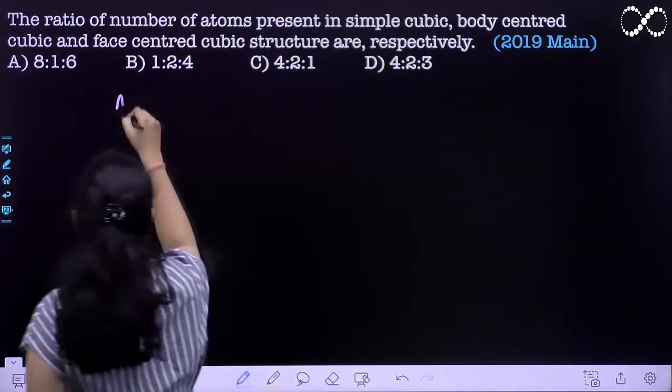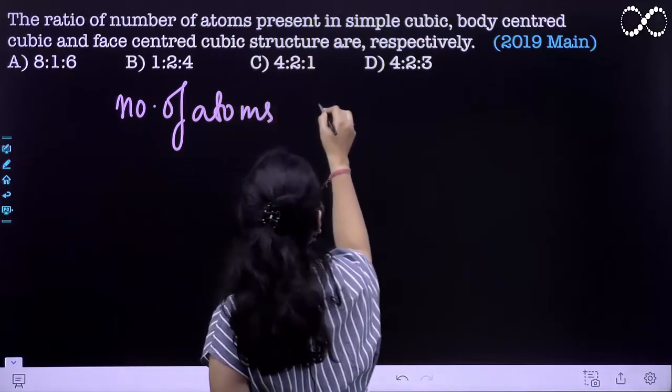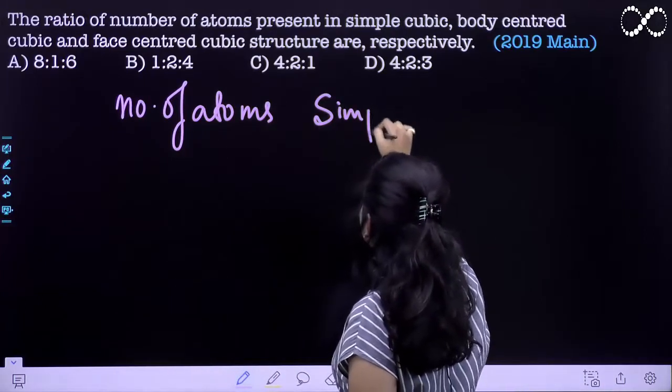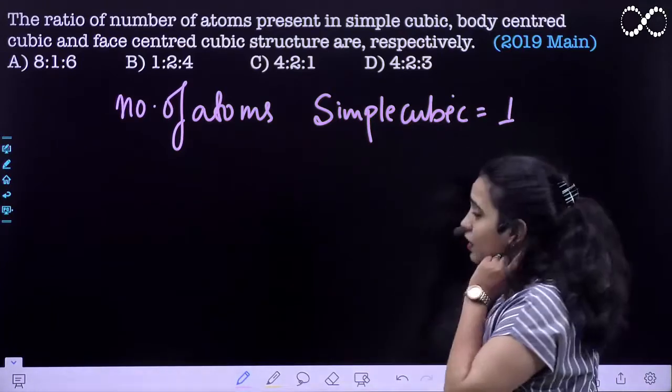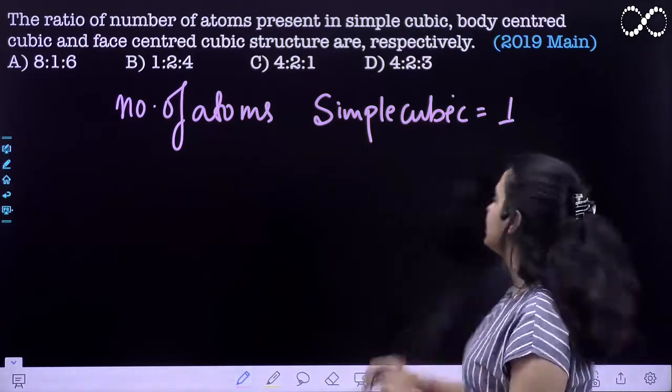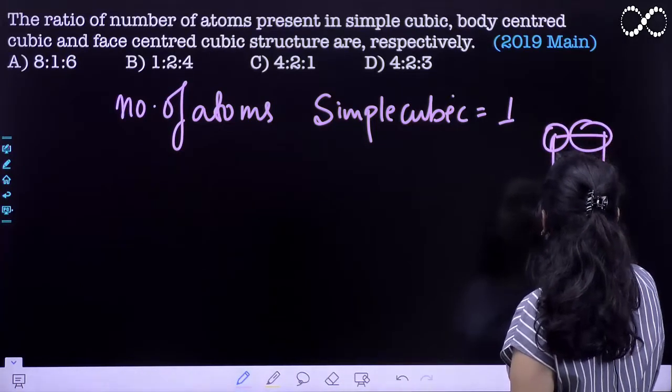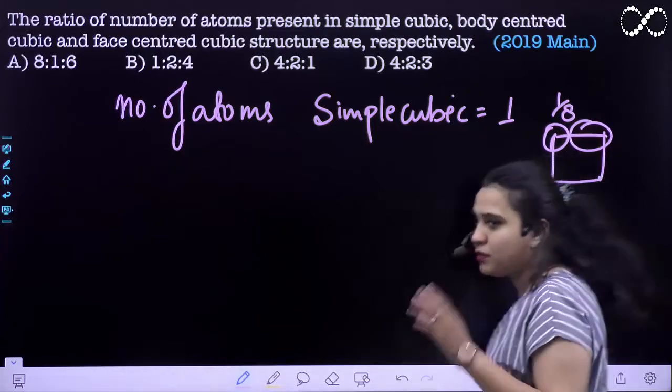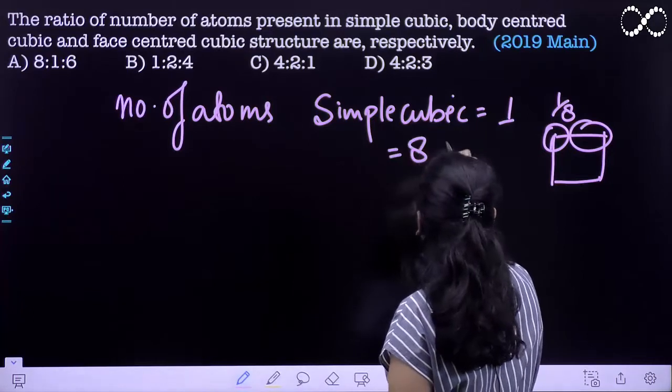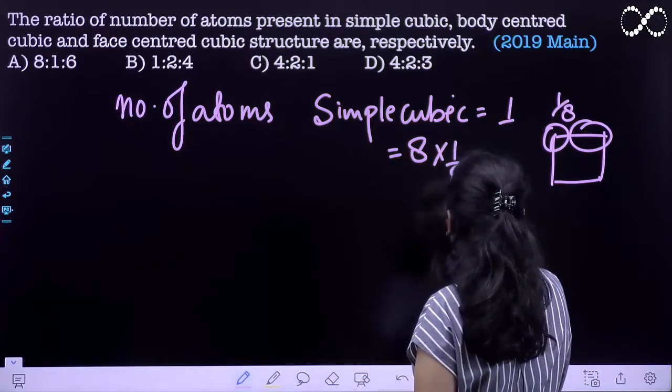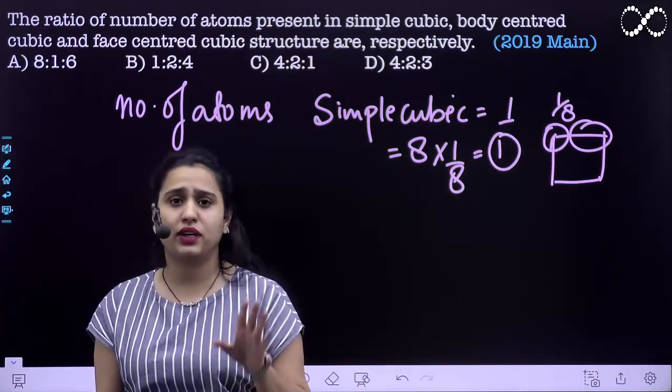So number of atoms which are in simple cubic, that is 1. Now, this is 1 because all the atoms are on the edges and each atom is participating 1 by 8th of its unit cell. So you have 8 atoms, which 1 by 8 parts participate. That is why, 1 atom per simple cubic cell.